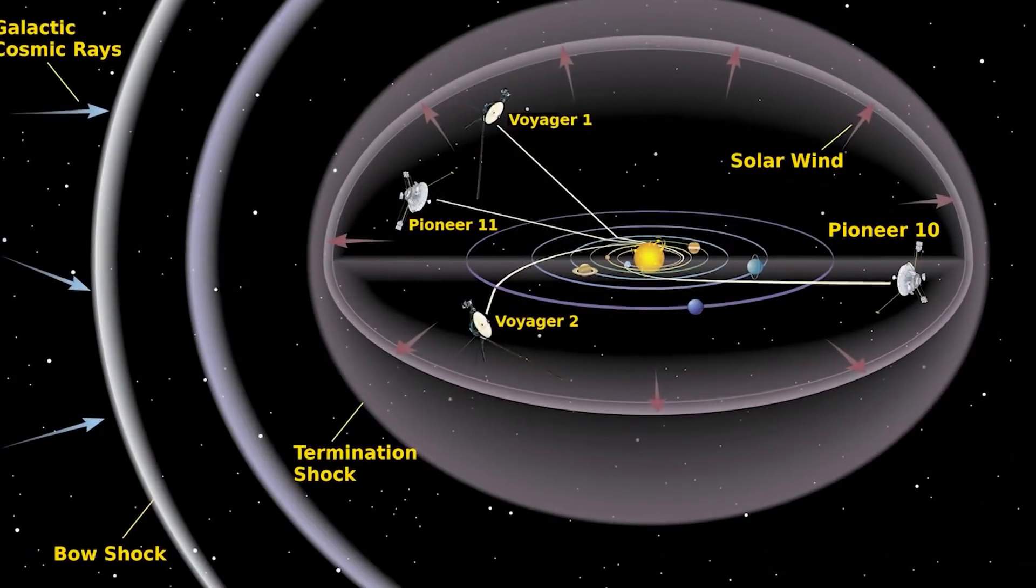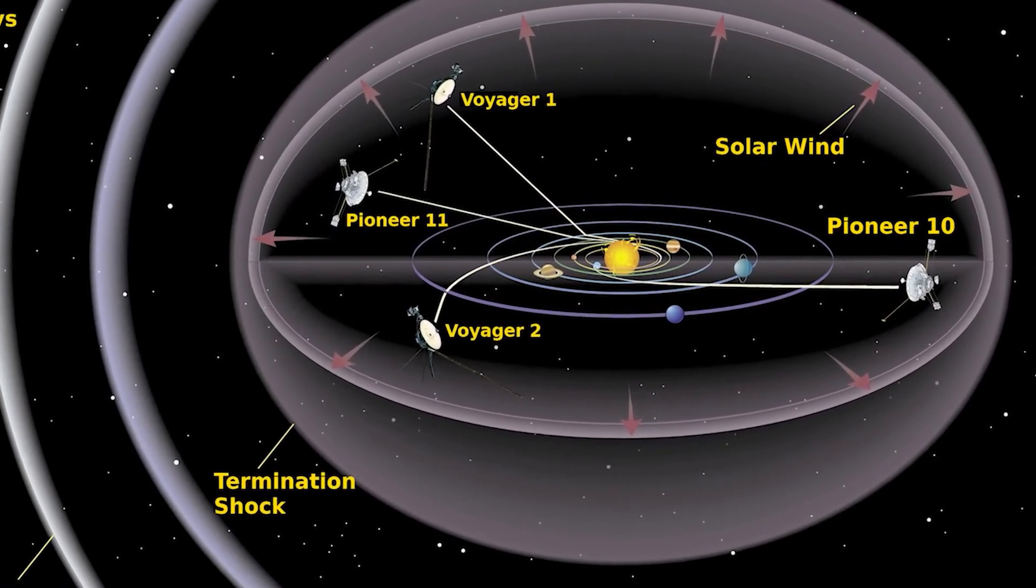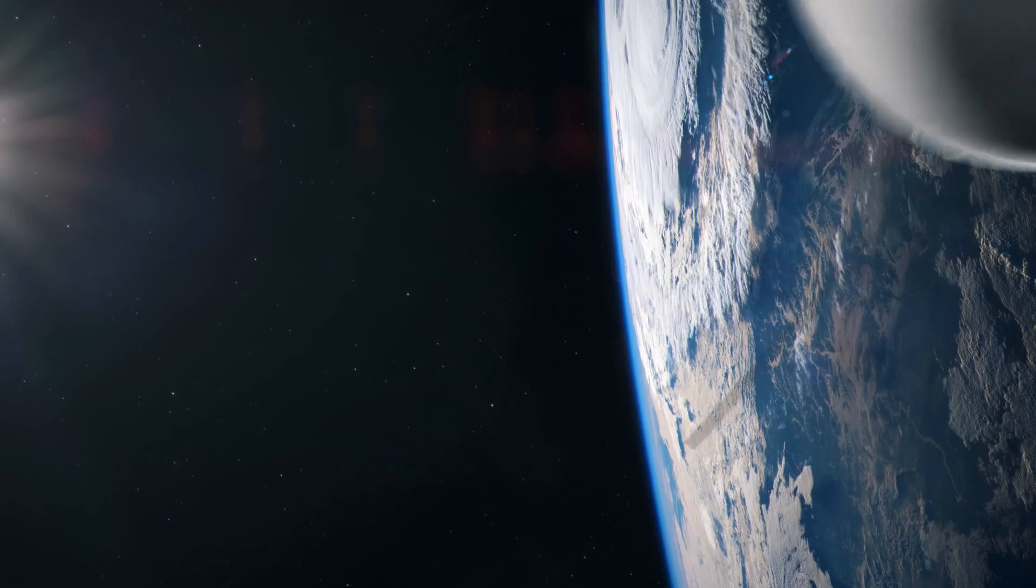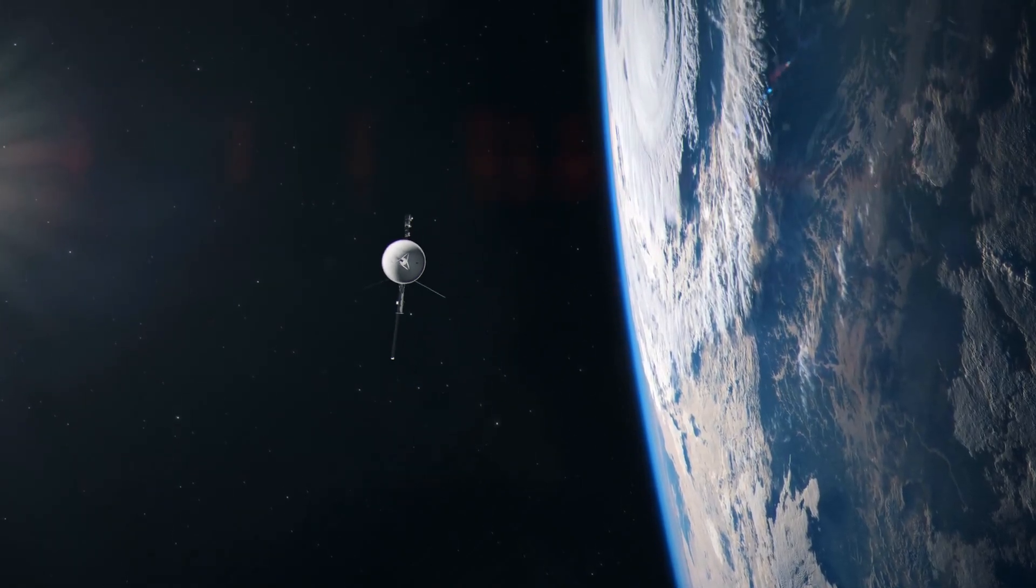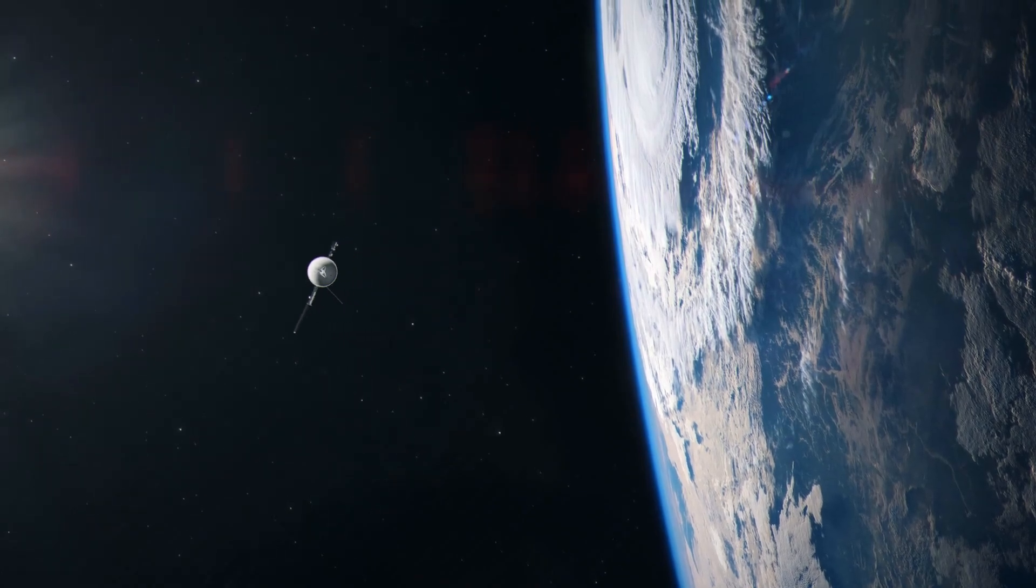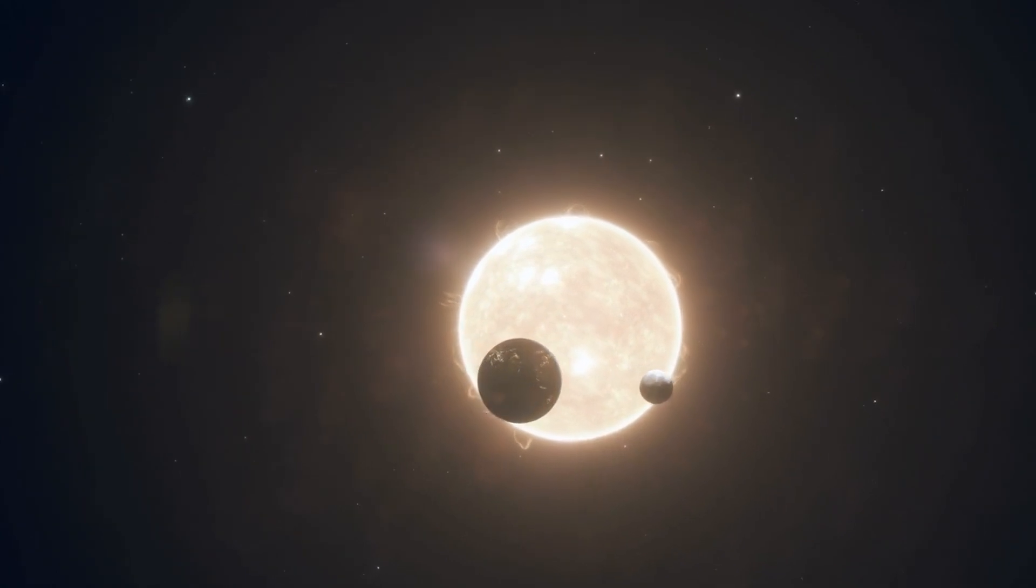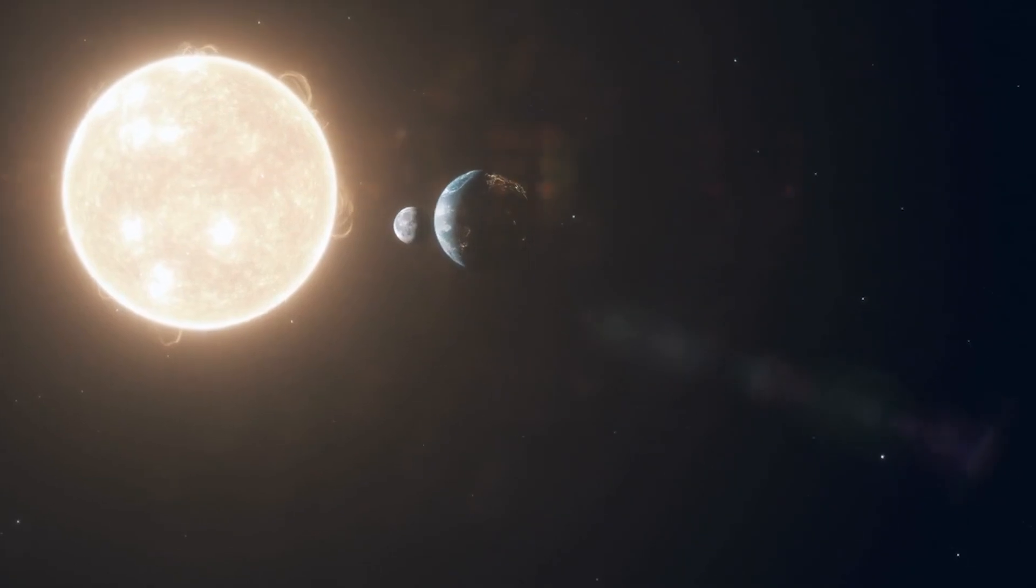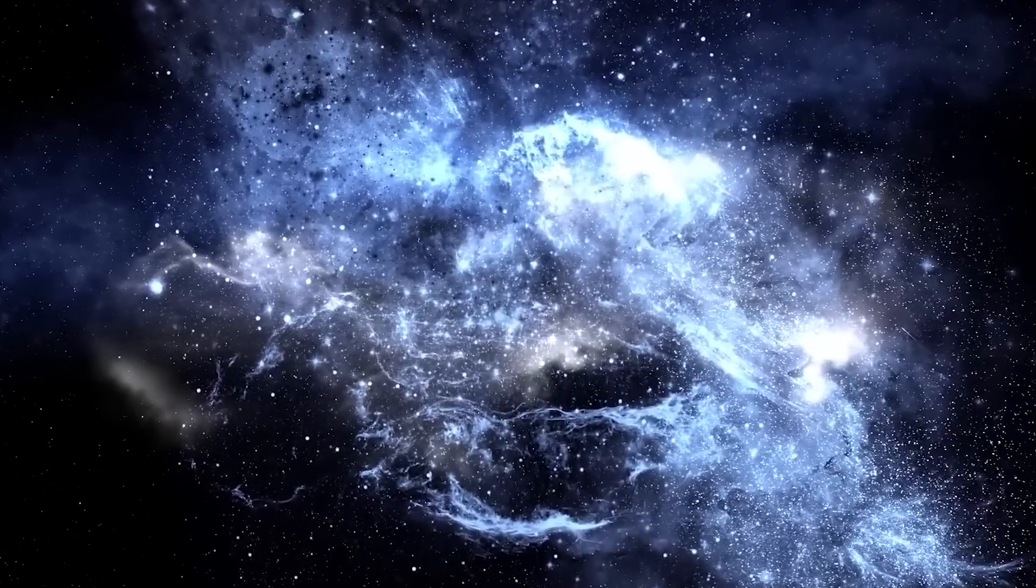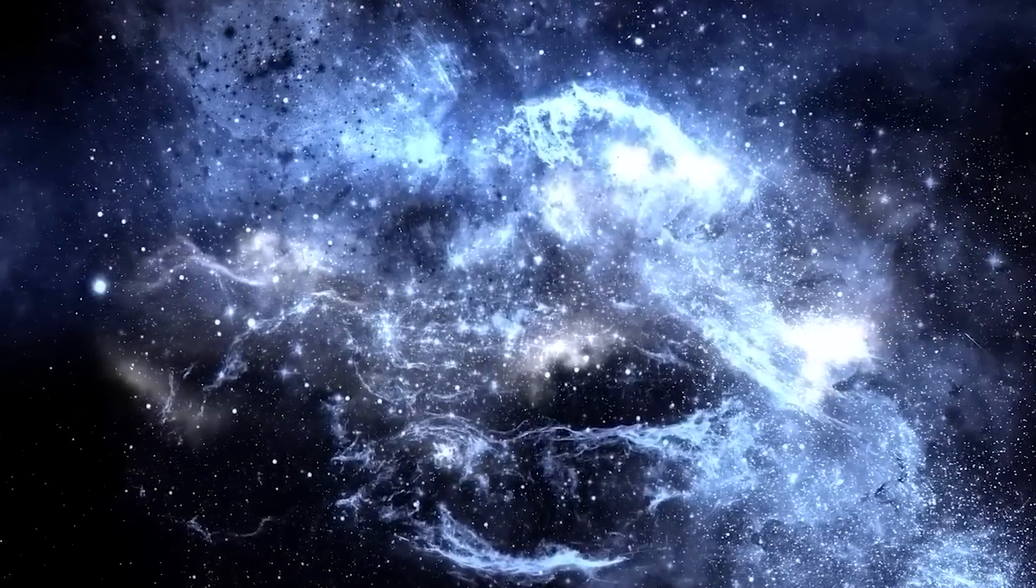Now, as Voyager 1 steadily journeys away, you might wonder how it could be returning to Earth. This phenomenon occurs during certain months each year when the distance between Earth and the probe fluctuates. This fluctuation arises because, during these months, Earth's orbit temporarily draws nearer to the spacecraft before receding once again. This is achievable due to the Earth's faster orbit around the Sun compared to the Voyager spacecraft's velocity.